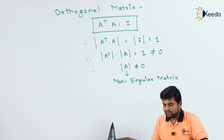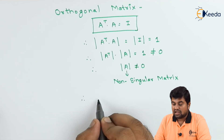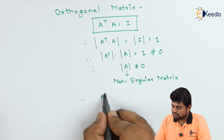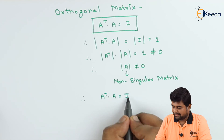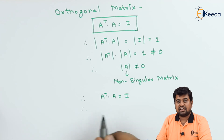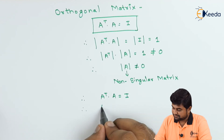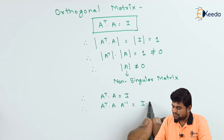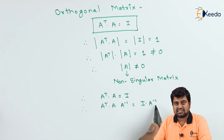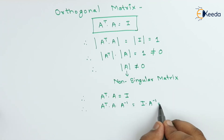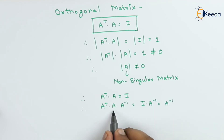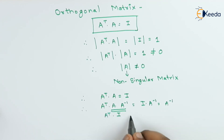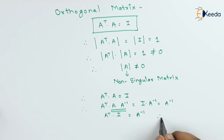Now let us find the inverse of an orthogonal matrix. We have A-transpose into A equals I. Post-multiplying both sides by A-inverse: A-transpose into A into A-inverse equals I into A-inverse. Since A into A-inverse equals I and I into A-inverse equals A-inverse, we get A-transpose equals A-inverse. So A-inverse equals A-transpose.